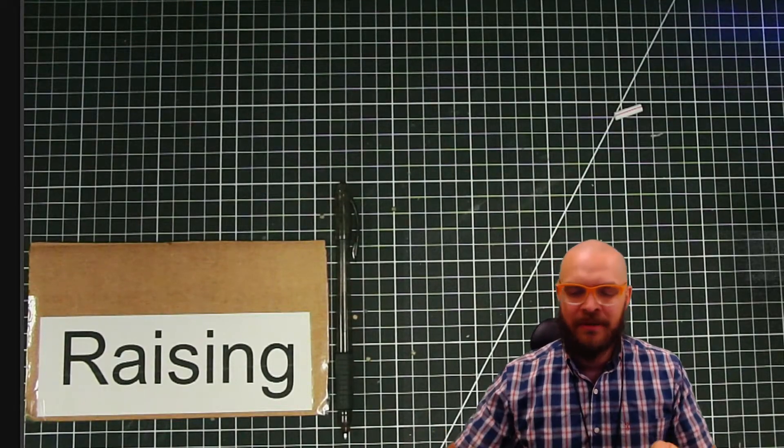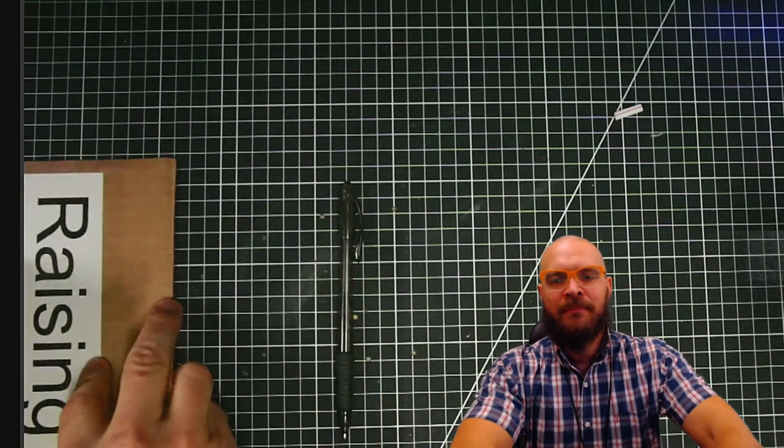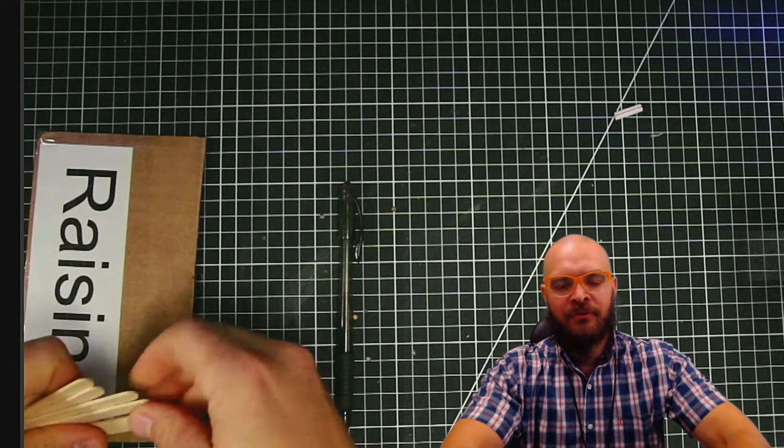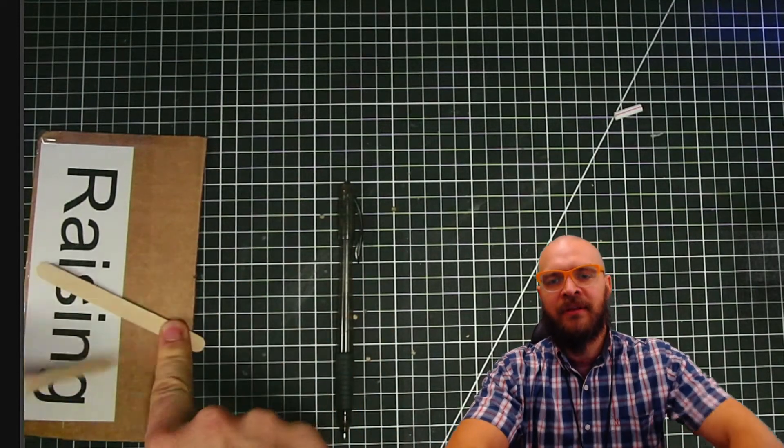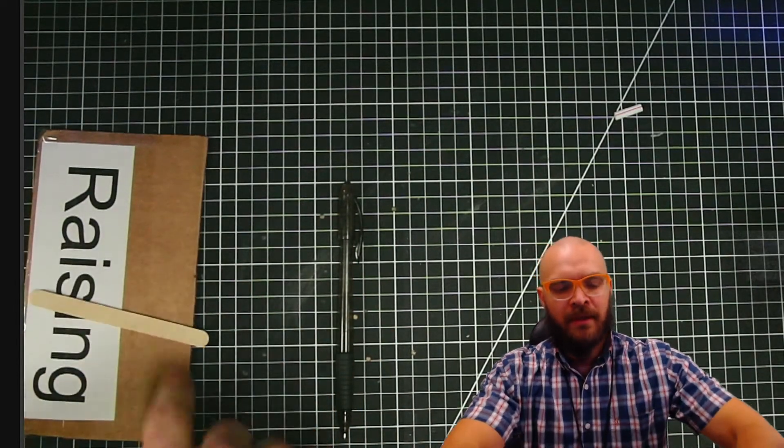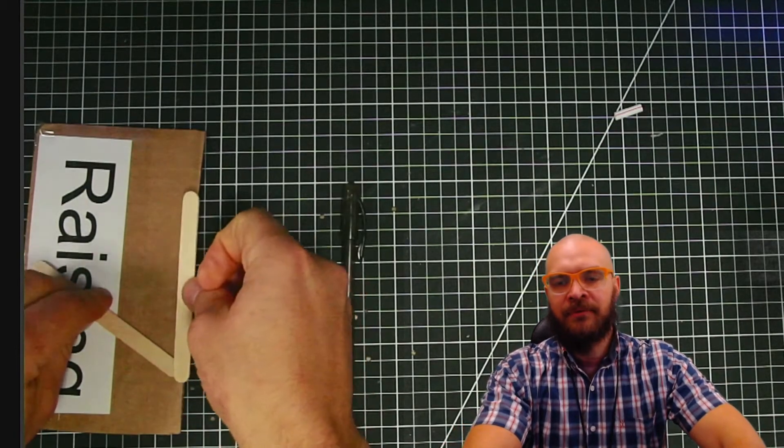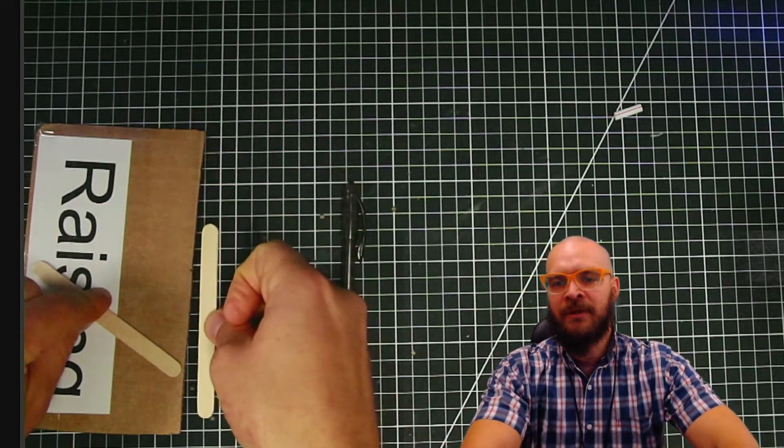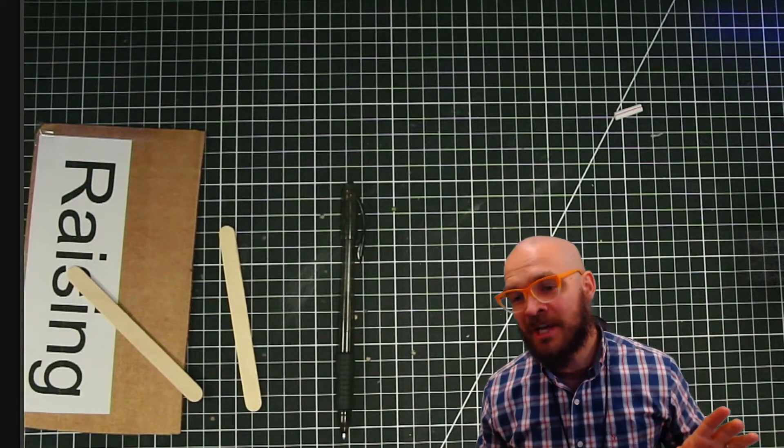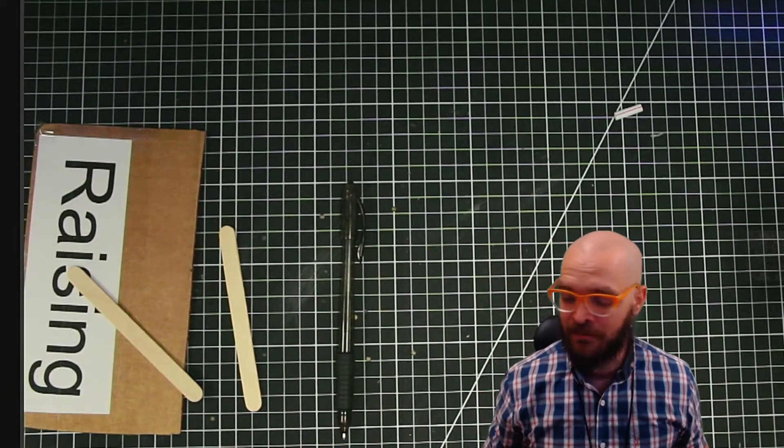Hey, we're going to be making the raising thing. What's going to happen is that as you move a lever up and down, a popsicle stick will be raised straight up or straight down. So this one's a little bit more challenging, but I think if you're up for it, we can make it work.